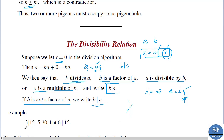For example, 3 divides 12 because 12 equals 3 times 4, so 3 is a factor of 12. We can say 3 divides 12, or 12 is divisible by 3, or 12 is a multiple of 3. Also, 5 divides 30 because 30 equals 5 times 6.